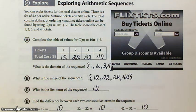Okay, so for instance, you can order tickets from the local theater. There's a fee of $2 per order. Matinee tickets cost $10 each. Total cost in dollars of ordering matinee tickets online can be found by using this rule. C(N) is equal to 10N plus 2. Okay, and the table shows the costs of 1, 2, 3, and 4 tickets.